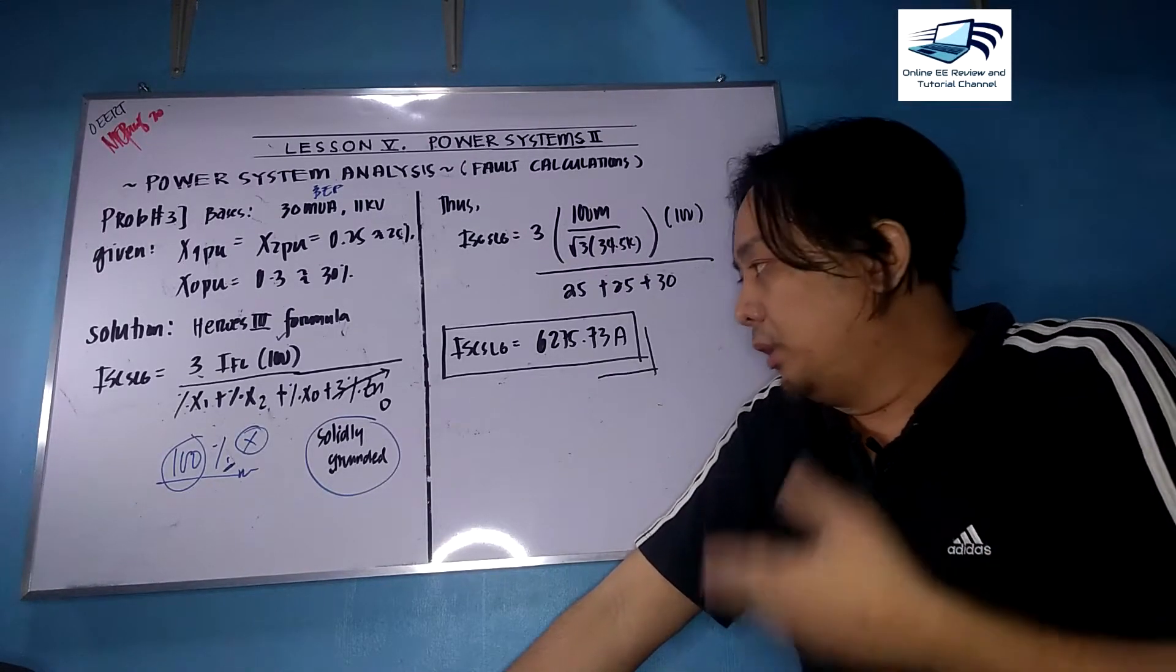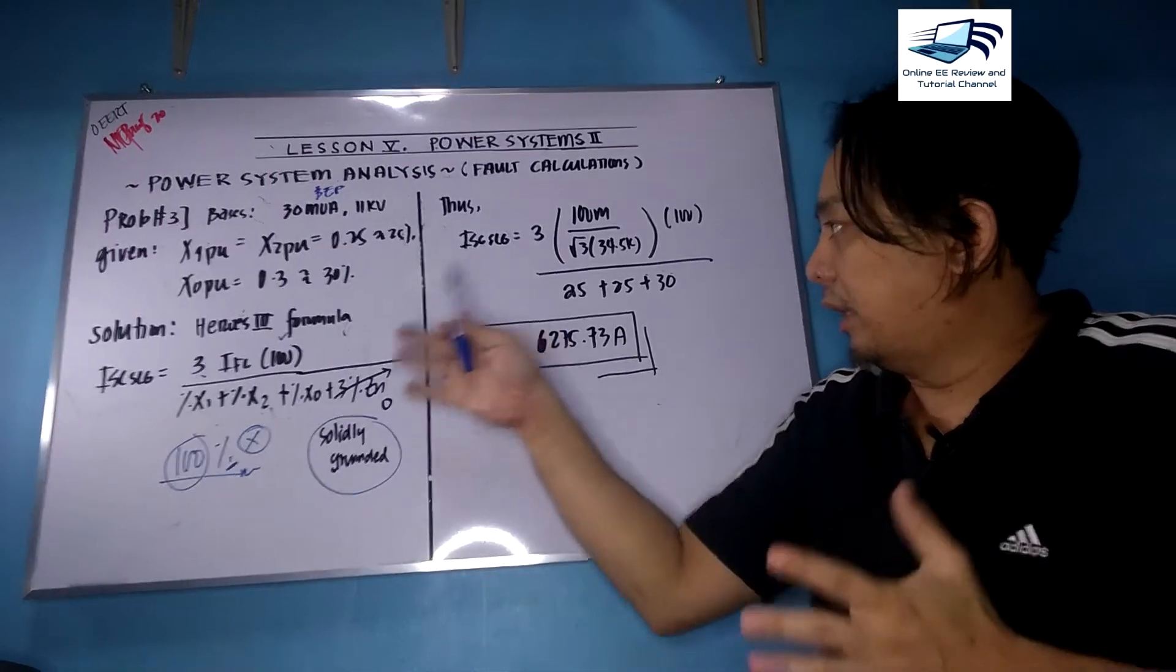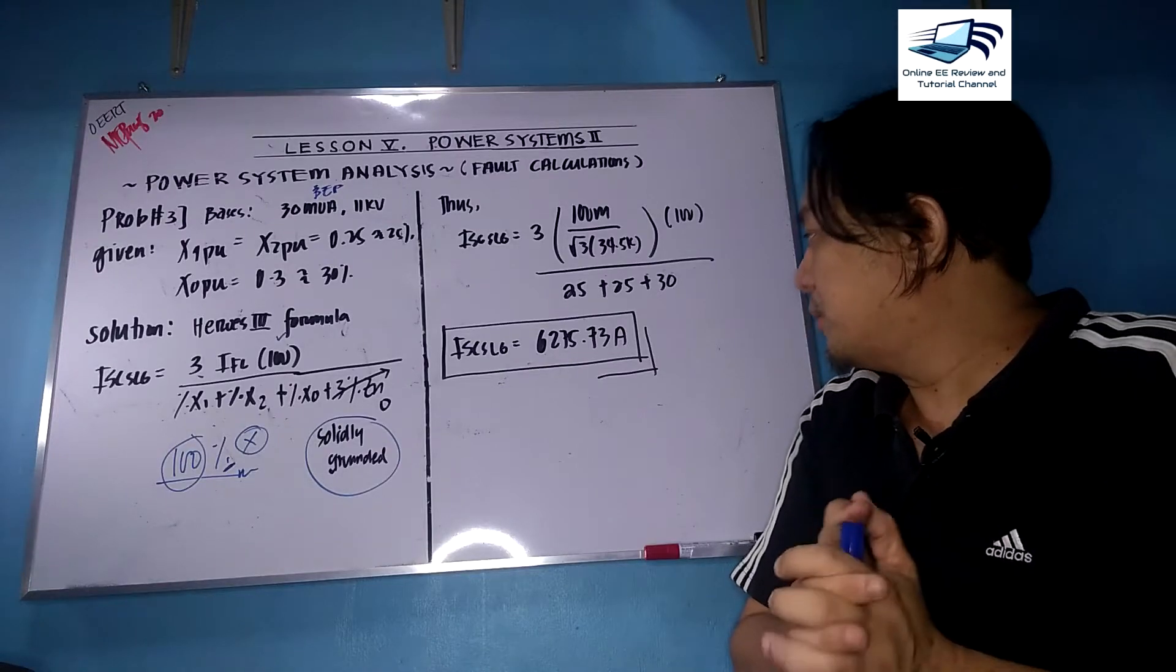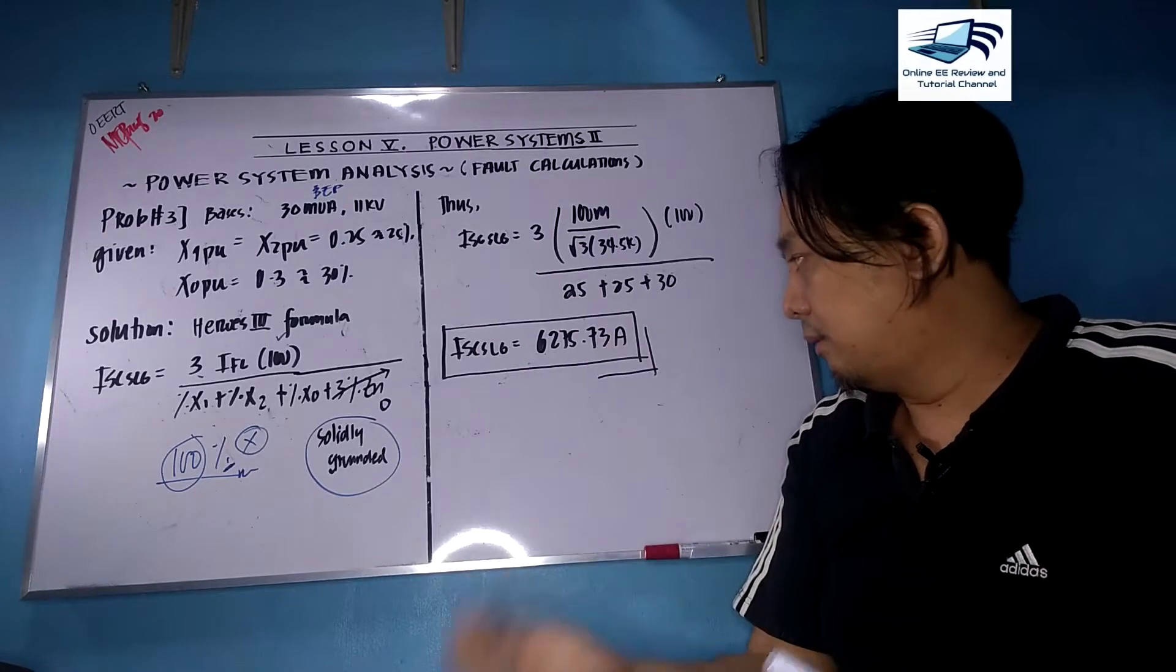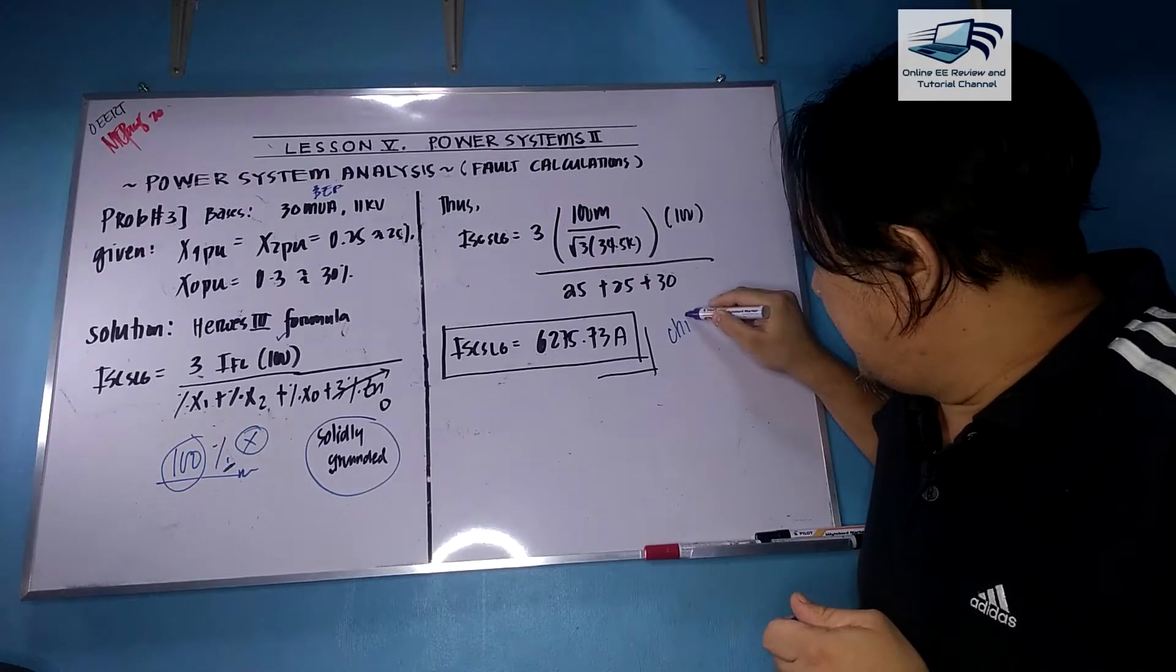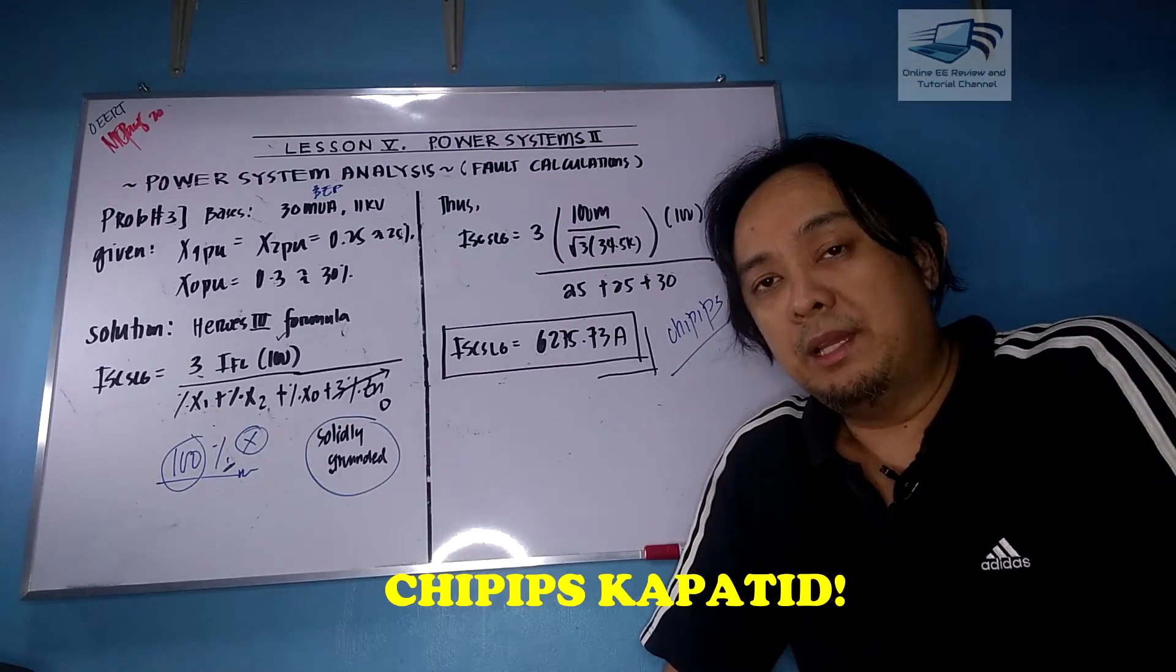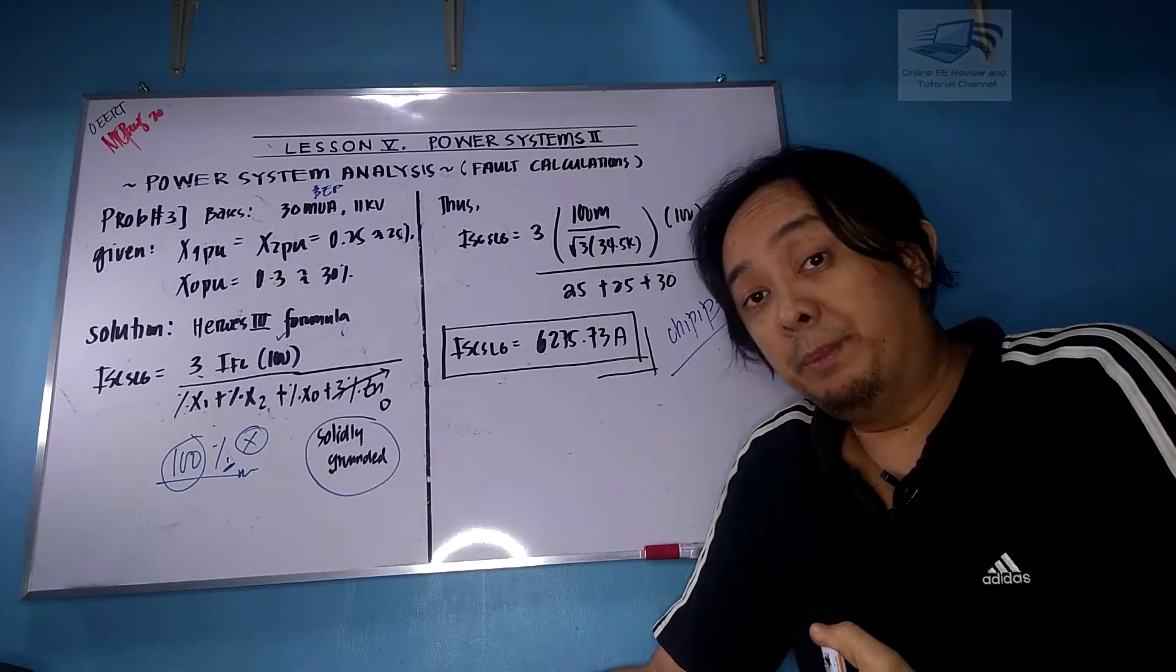There's no Zn simply because the connection is solidly grounded. However, if there's an impedance to neutral reactance, you need to consider it. By direct substitution: you have 3 times 100 million over square root 3 times 34.5k times 100 over 25 plus 25 plus 30. If you evaluate this, the answer is 6275.73 amperes. As long as you know the formulas, the mnemonic, and how to apply it, you can easily solve any problems on the open circuit condition.